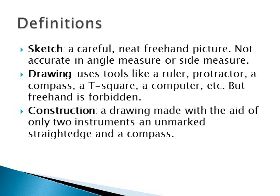And then last is a construction, which is what you have probably never done before this class. It's a drawing made with just two instruments. One is an unmarked straight edge, which we're usually going to use a ruler or a protractor for that straight edge, even though there are markings on it. We just have to disregard the markings.